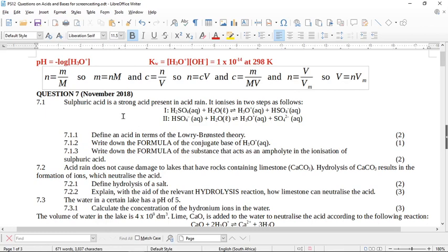So all of these general formulas that we use for stoichiometry calculations, we're going to use in this question as well. Sulfuric acid is a strong acid present in acid rain. It ionizes in two steps as follows. Sulfuric acid plus water goes to a proton plus this hydrogen sulfate ion, and then this hydrogen sulfate ion plus water goes to a hydronium ion and the sulfate ion. So this is a standard two-step ionization.